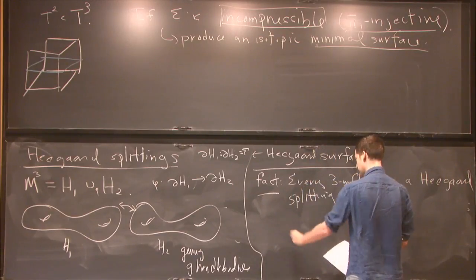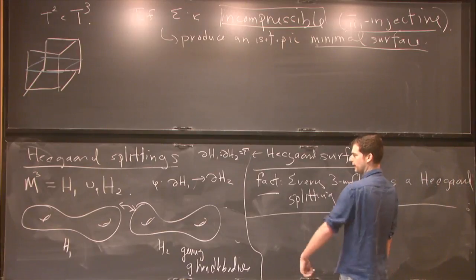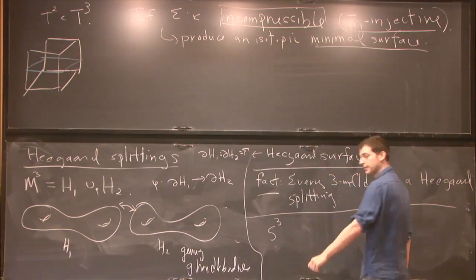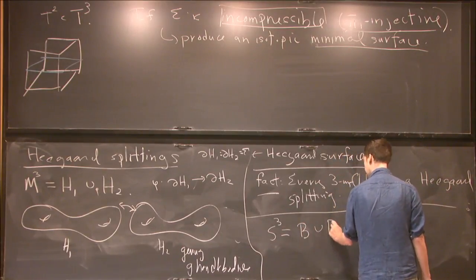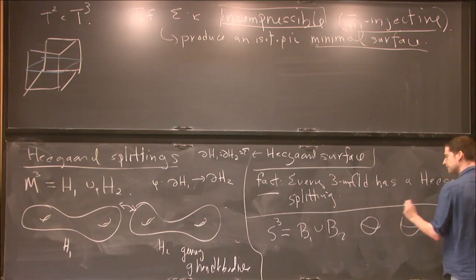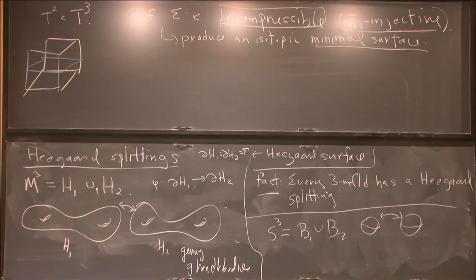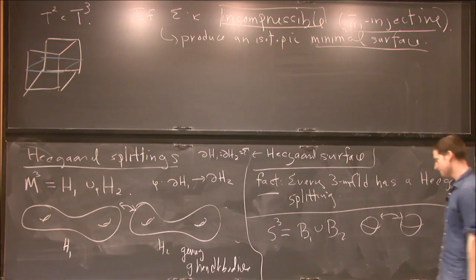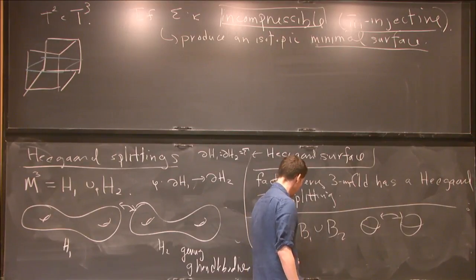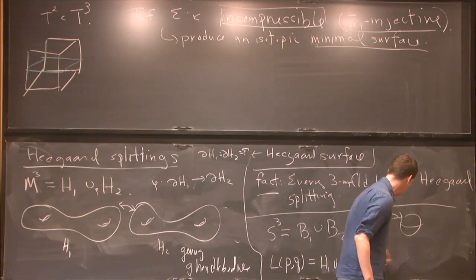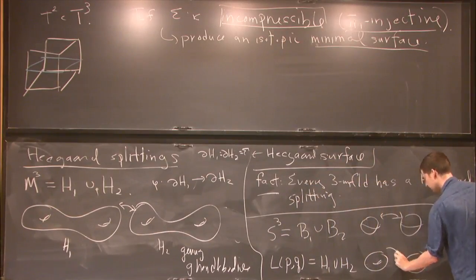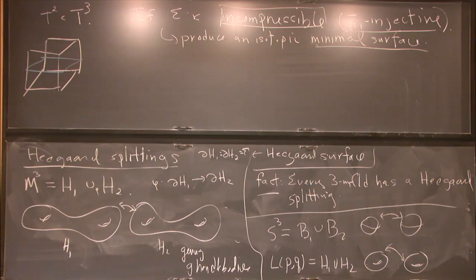Some examples of these decompositions: the simplest is the three-sphere, which we write as two balls glued together. The next most complicated are lens spaces, where both handle bodies are solid tori.